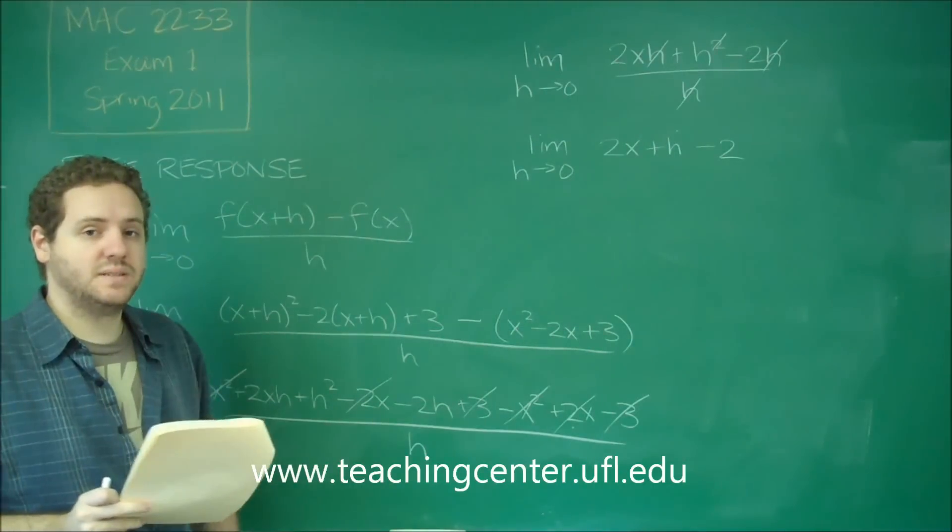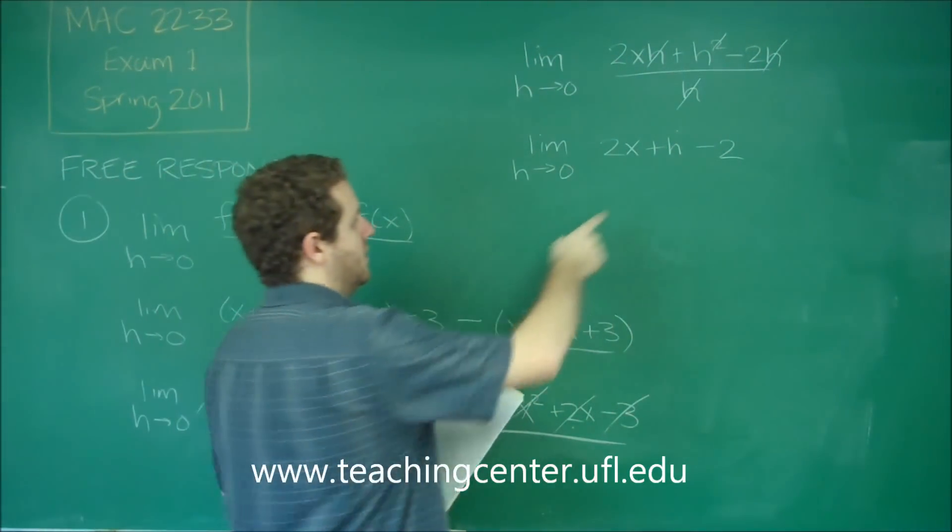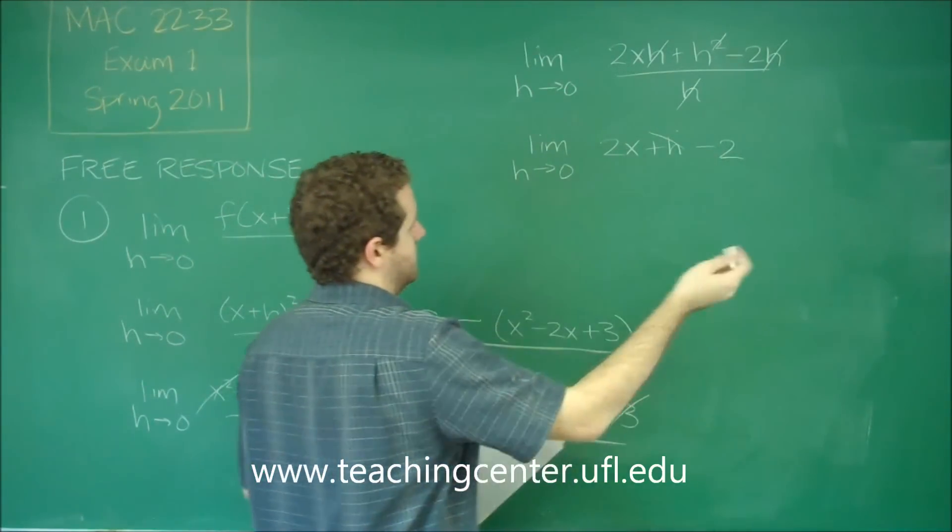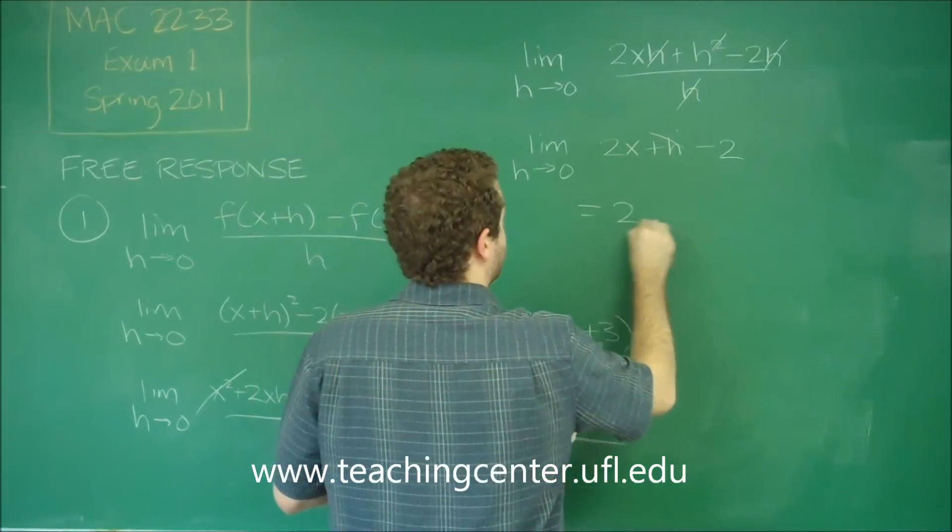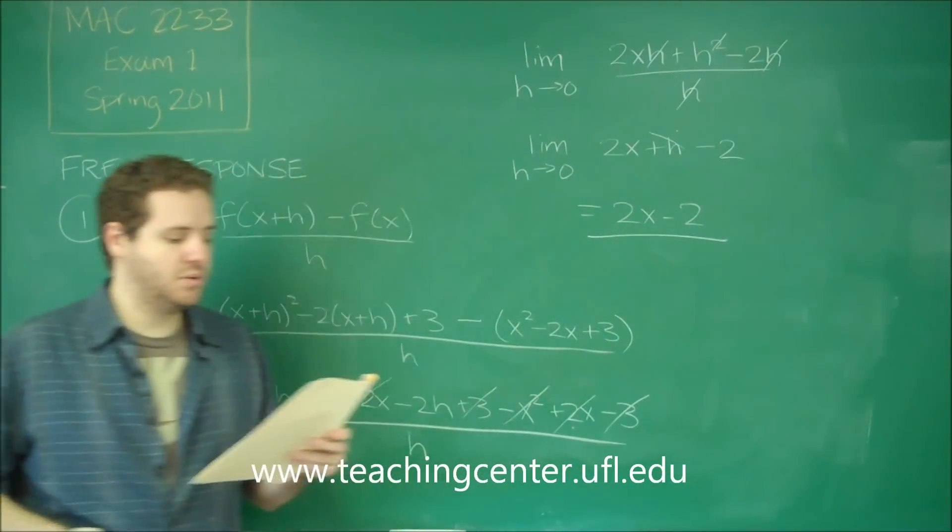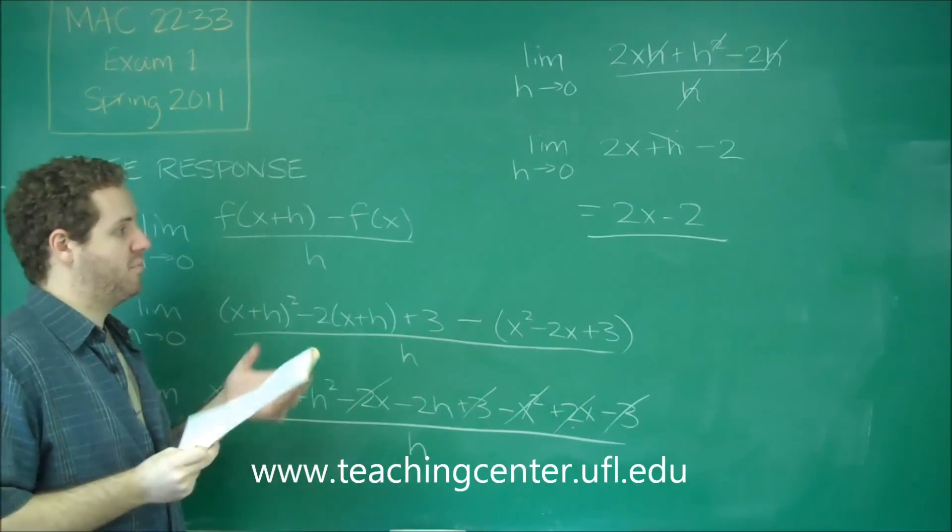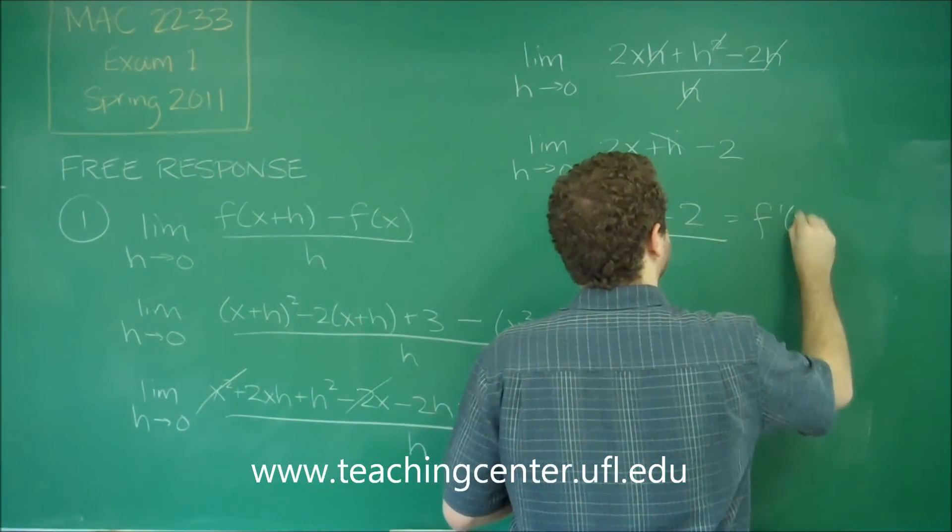Now we definitely can plug in 0 for h because we don't have a problem of dividing by 0 or anything like that. This term just becomes 0, then it goes away. We get 2x minus 2 as our f prime of x. This is our derivative.